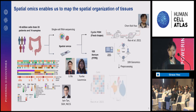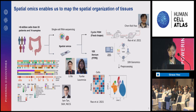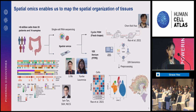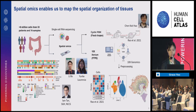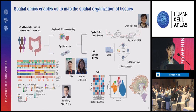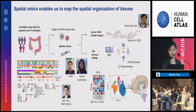As a computational biologist, the question is: what do we get as output from these technologies? It looks quite similar to single-cell data — we get a cell-by-gene matrix. But in addition, we get two or three rows of information: the X, Y, Z coordinates of where the cells live in physical space. We can project our cells into expression space as usual in single-cell RNA sequencing, but now we can also map them back into physical space, and then ask how these two spaces correlate.